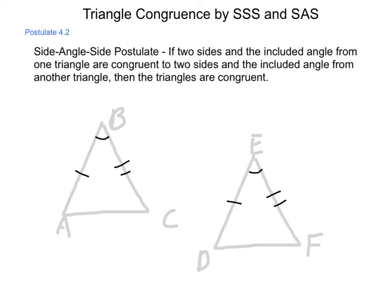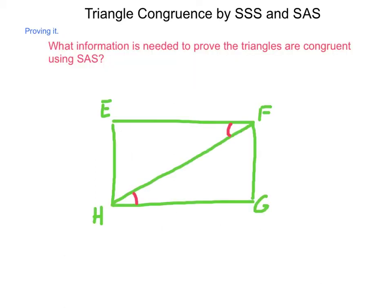So, how can we use this to generate proofs? Well, we need to establish two sides and the angle in between them as being congruent. So let's take a look at this. What other information would we need to prove that these triangles are congruent using side-angle-side?